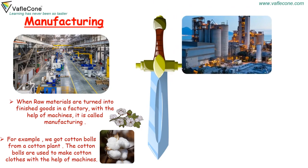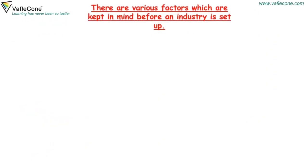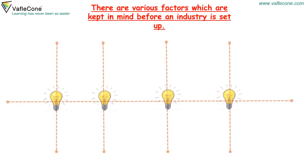Industry: The place where raw materials are changed into useful finished goods is called an industry. There are various factors which are kept in mind before an industry is set up.